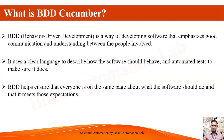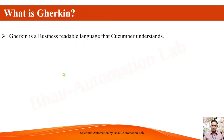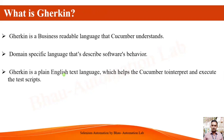So what is Gherkin? Gherkin is the business-readable language that Cucumber understands. We develop our scenarios and feature files in Gherkin language. Gherkin is a business-readable language everyone can understand because it is in simple plain English. It's a domain-specific language that describes the software behavior — how the software is behaving — everything described in the Gherkin language. Gherkin is a plain English text language which helps Cucumber interpret and execute the test cases.